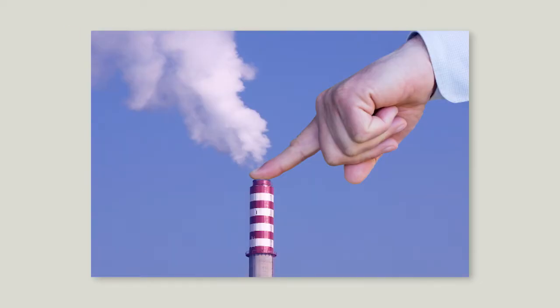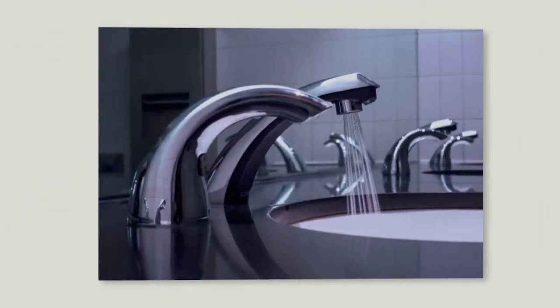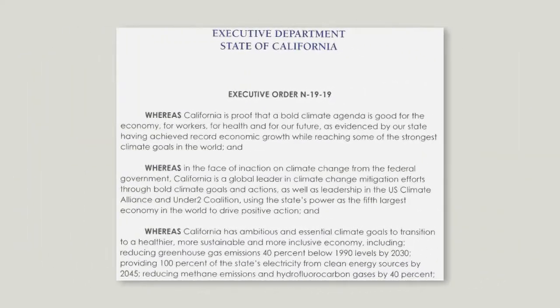The goals were: number one, reducing greenhouse gas emissions from buildings; number two, promoting environmentally responsible, cost-effective, healthier places to live and work; number three, reducing energy and water consumption; and number four, responding to the environmental directives of the administration.